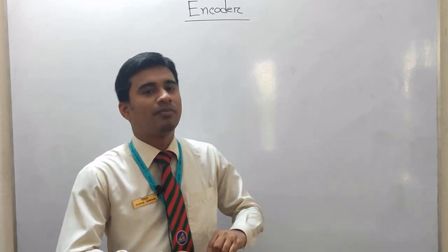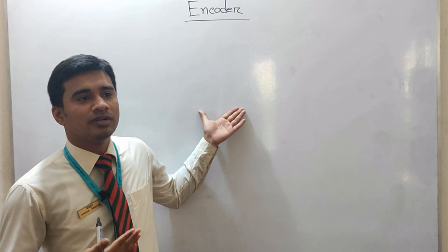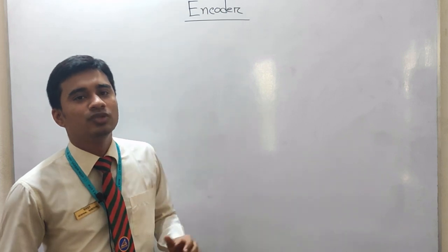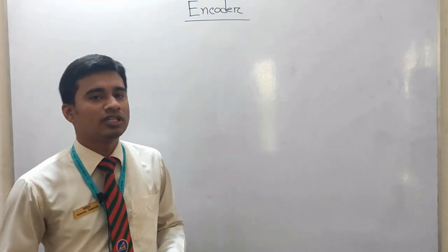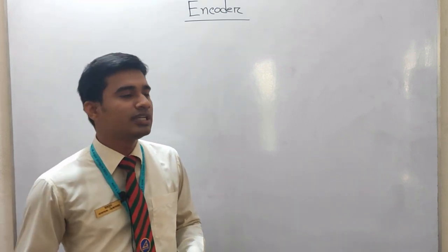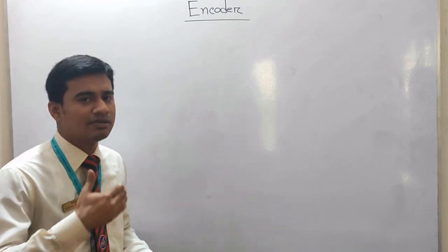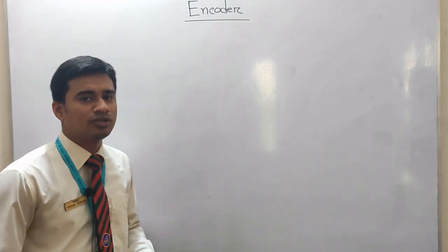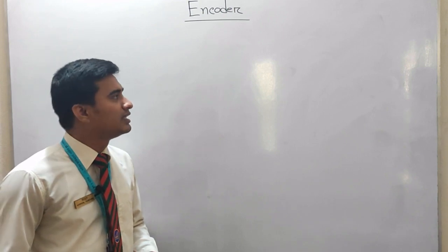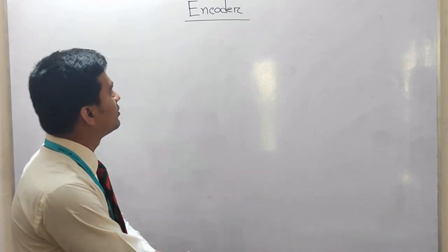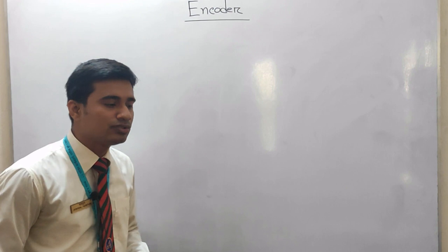So, in our computer language, we are able to work in the same language — this is an encoder. Humans work in their own way, while computers work in binary. So you have to understand that. The encoder is going to do that, so you have to look at the truth table.